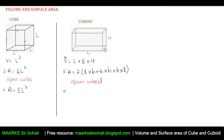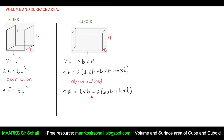For an open cuboid — for example, a swimming pool, which is rectangular and open at the top — the surface area formula is: length × breadth (for the bottom) + 2(breadth × height) + 2(height × length). We don't double the length × breadth term because only the bottom is present; the top is missing.